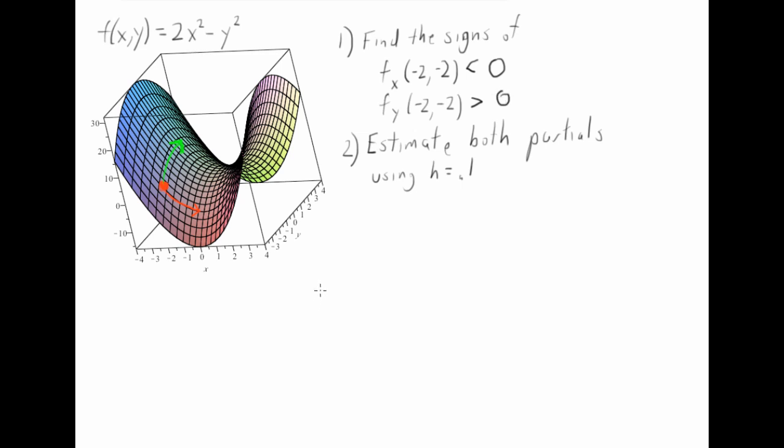Alright, once we've done that, let's actually estimate both partial derivatives using h equals 0.1. So at this point, if you're not familiar with it, look in our textbook about the definition of each of these partial derivatives. So you can say, ah, that's where the h comes from.